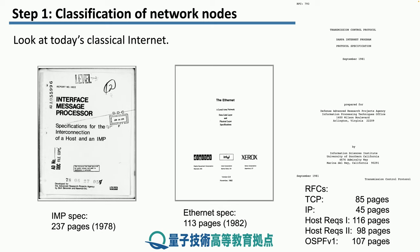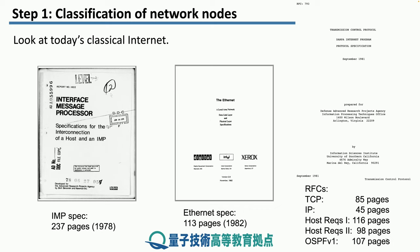Furthermore, we also have what are known as RFCs — Request for Comments. These specify various protocols that the internet rests on. We have TCP, which is 85 pages, and IP, which is 45 pages. So writing down all these rules is not an easy task and it takes a very long time.